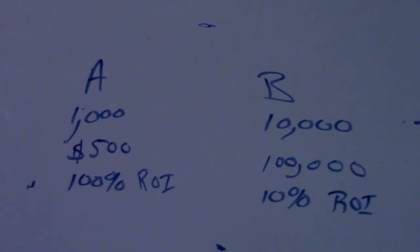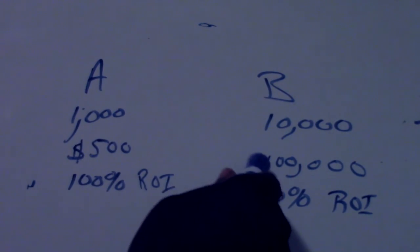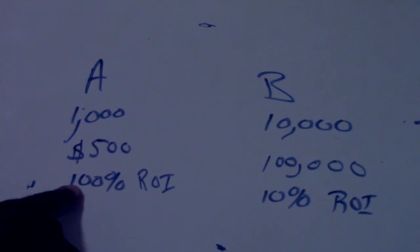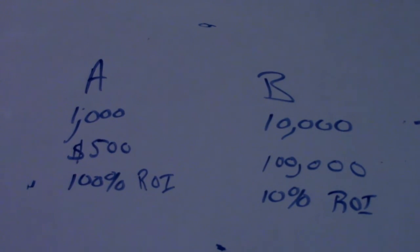Person A made a 100% return on investment. Now knowing that information, you can easily say person A made the better investment. Because if person A would have had person B's money, how much money would he have made? He would have made $100,000 because you can look at the percentage. That's why when you see me talk on Facebook, when you see me talk on Twitter, Instagram, anything, I never tell you the dollar amount of what I make. I always tell you the percentage.